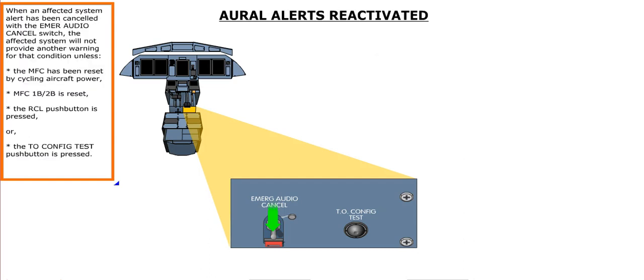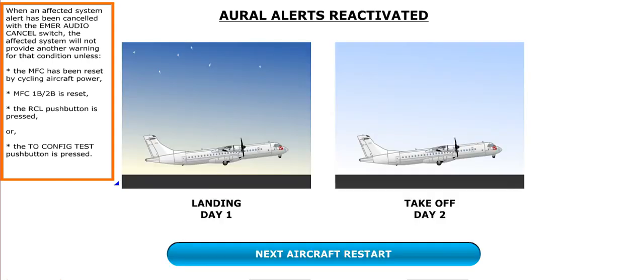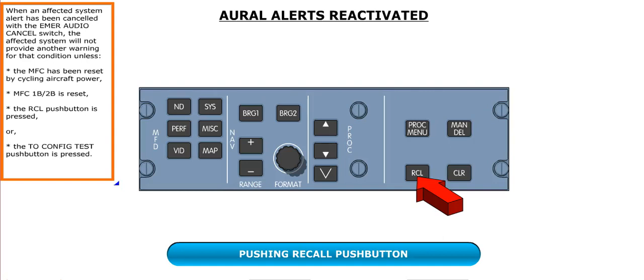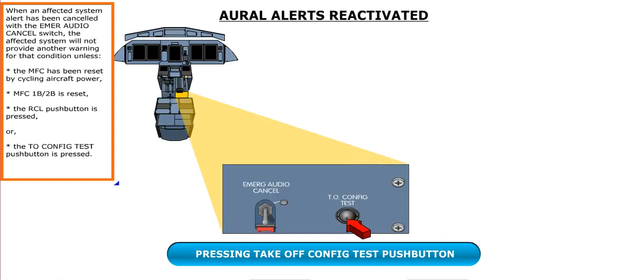When an affected system alert has been canceled with the Emergency Audio Cancel Switch, the affected system will not provide another warning for that condition unless the MFC has been reset by cycling aircraft power, MFC-1B or 2B is reset, the Recall pushbutton is pressed, or the Takeoff Configuration Test pushbutton is pressed.